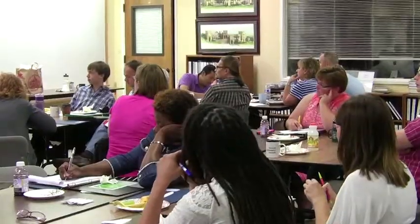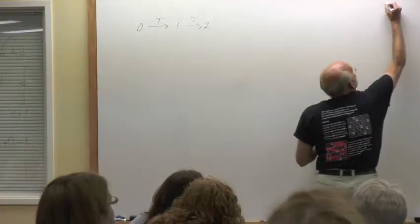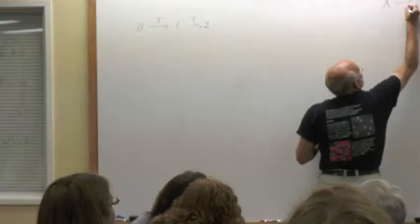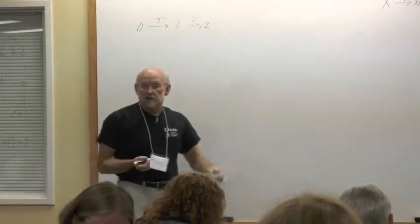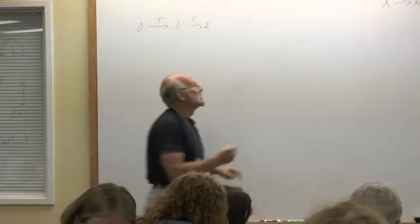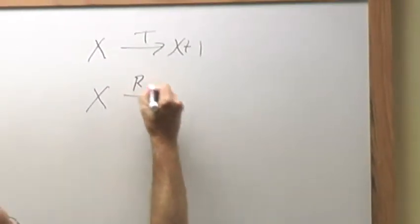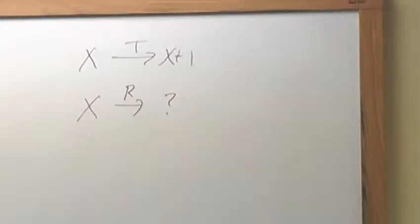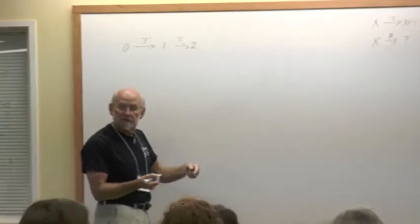And so we're going to say for sure that if I start with a number X and I do a twist to it, I get X plus 1. That's a nice, reasonable thing to do. And the question is, if I start with some number X and I do a rotate to it, what in the heck belongs over here?